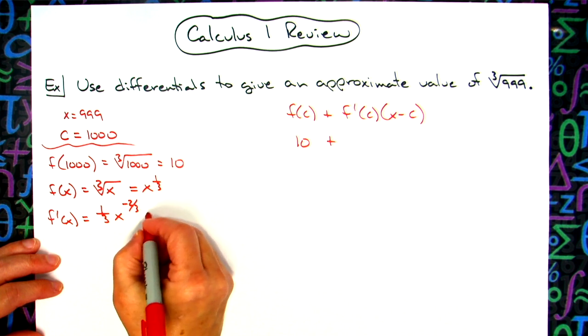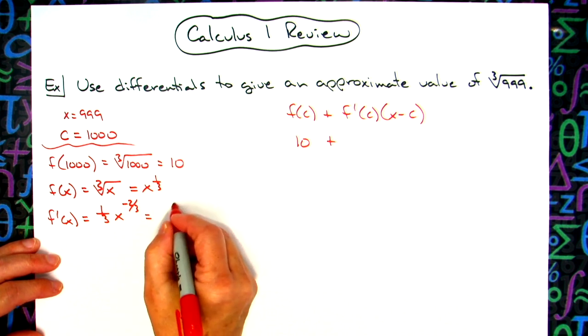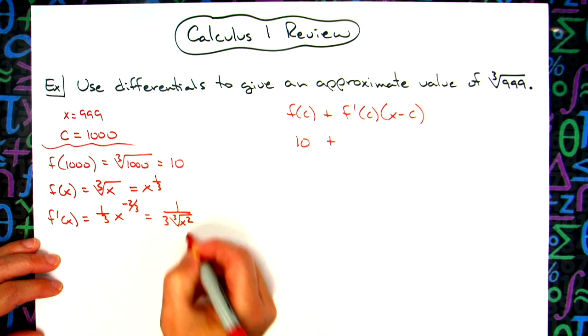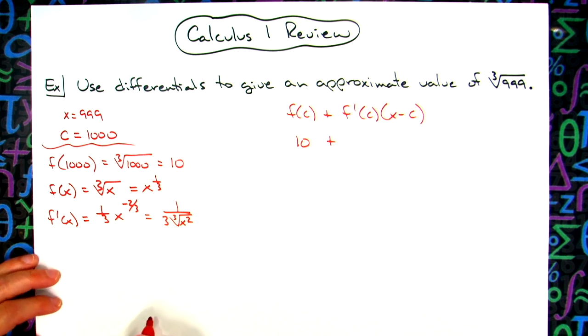Let's go ahead and simplify that. Give her that negative exponent. We'll have a 1 over 3 times the cube root of an x squared. Just kind of simplifying that down into a form that we're going to be able to use.